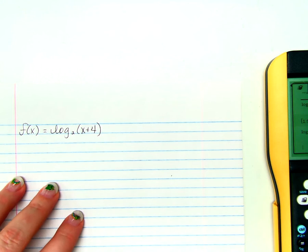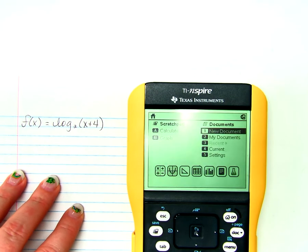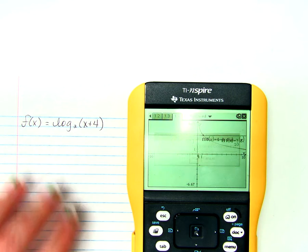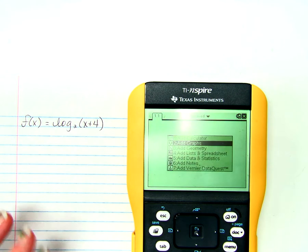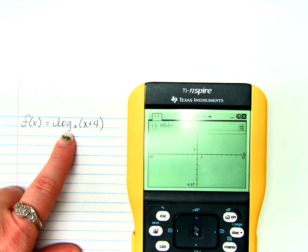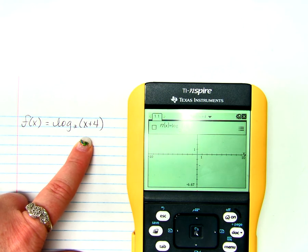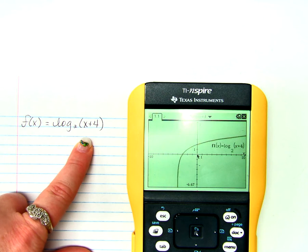What if we had to graph this? Once again, let me go home and make a new document. Once again, if we have these wonderful calculators, we can put it straight in exactly as it is. Log base 2 of x plus 4, and we get this nice pretty drawing.